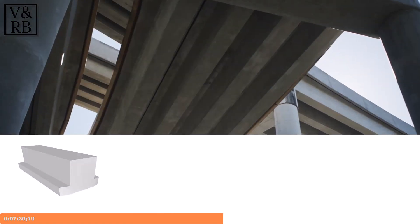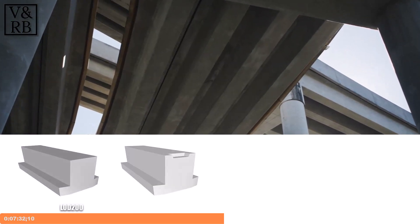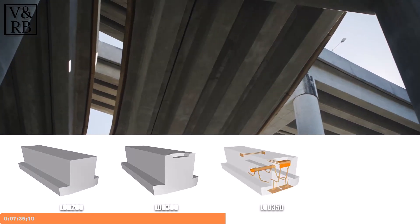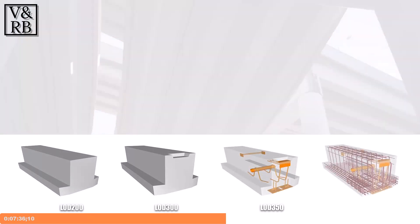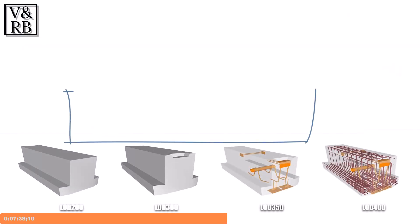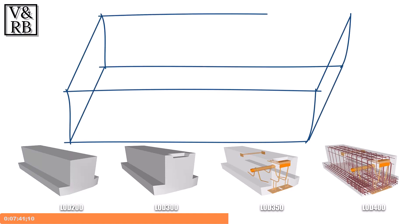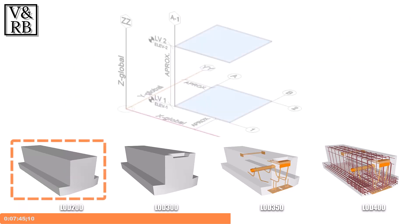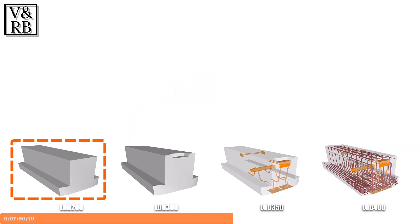Using precast concrete T-beams as an example, the BIM Forum's LOD spec expresses the LOD progressions as follows. LOD 100 may have the beams represented by a generic spatial zone modeled to their worst-case depth. LOD 200 has the structural grids defined accurately, and the structural elements are modeled with approximate worst-case dimensions.